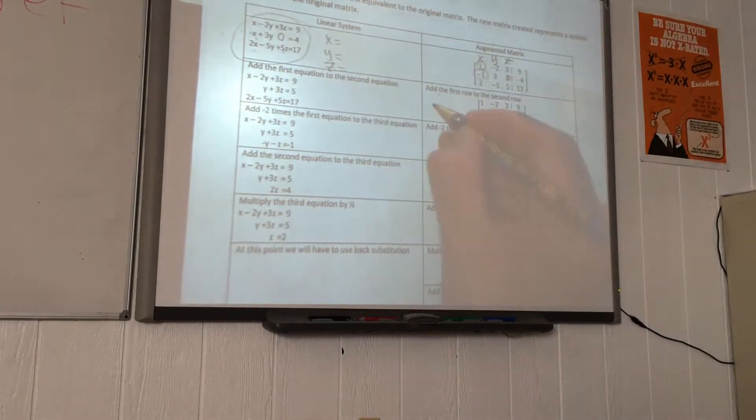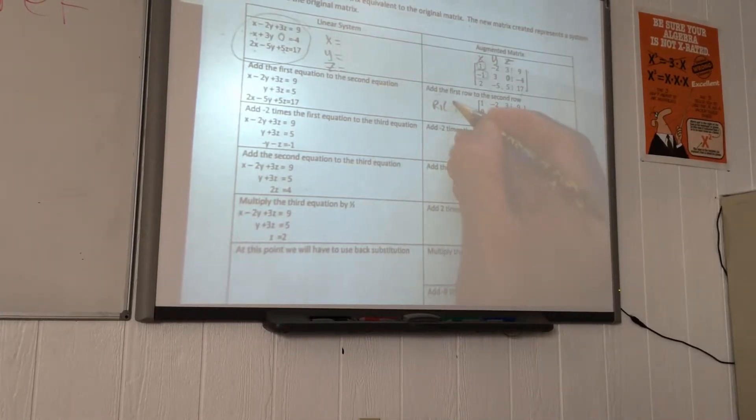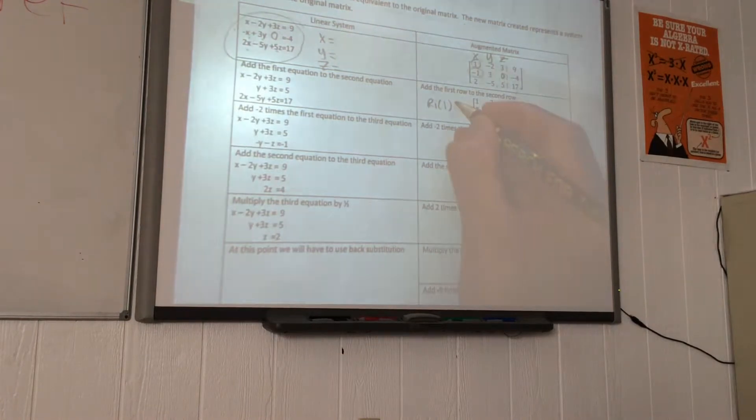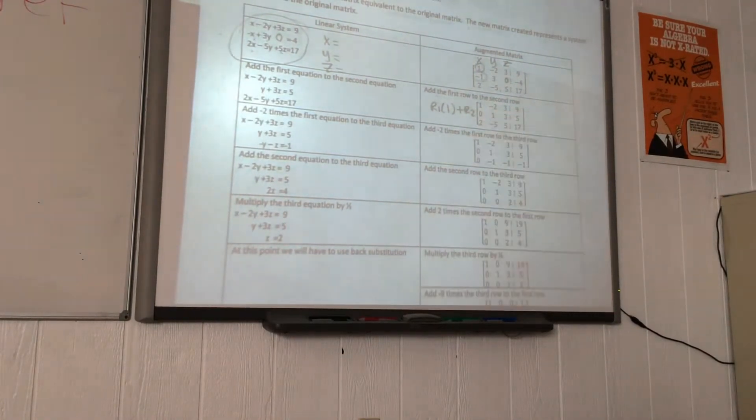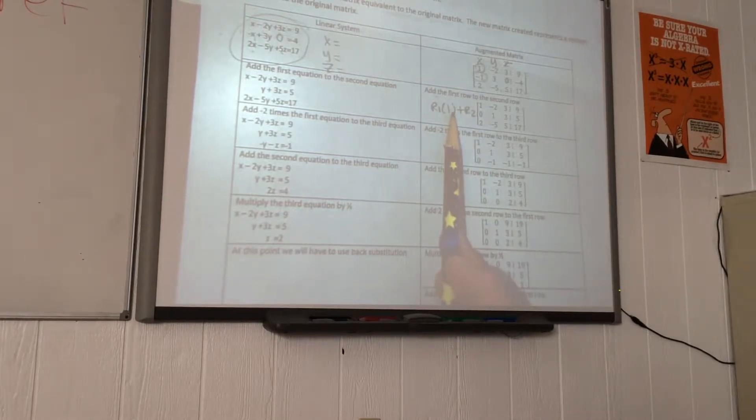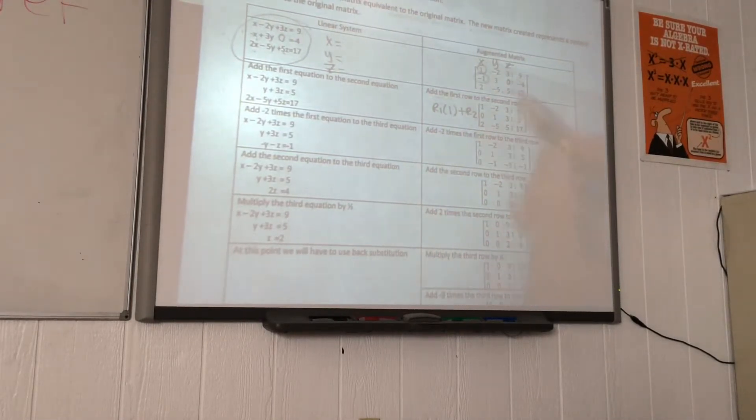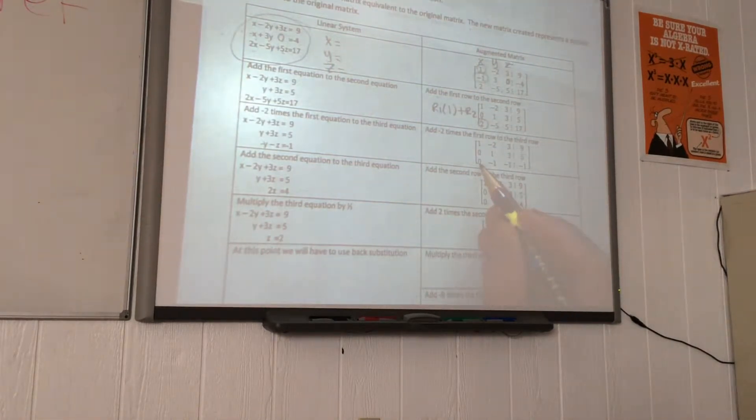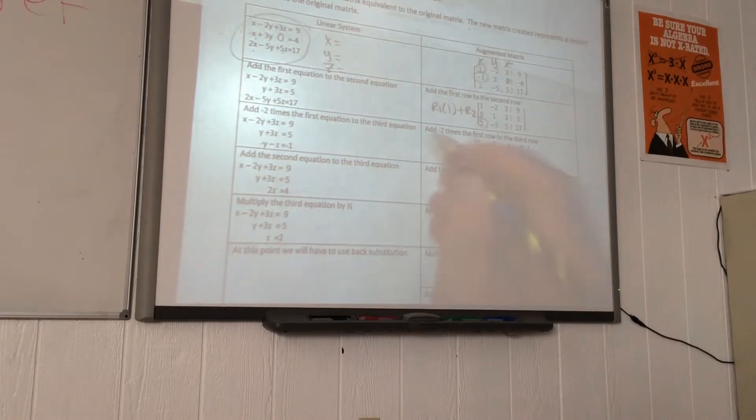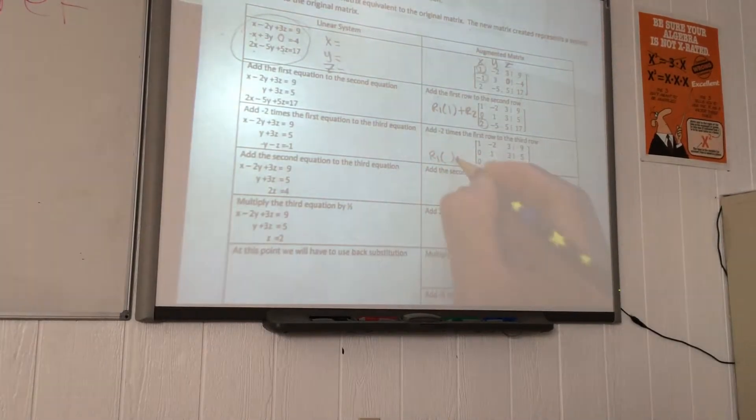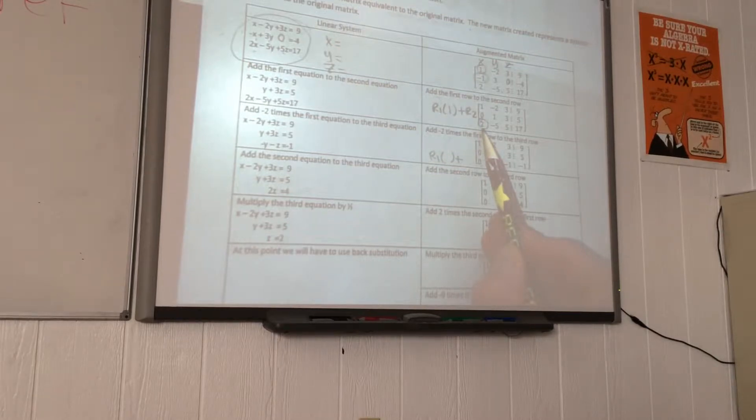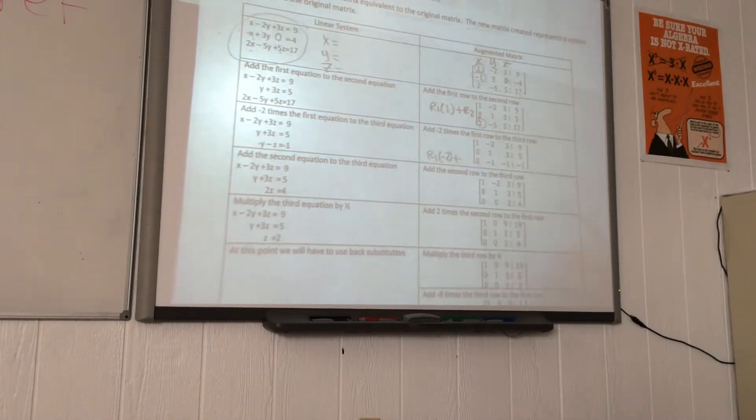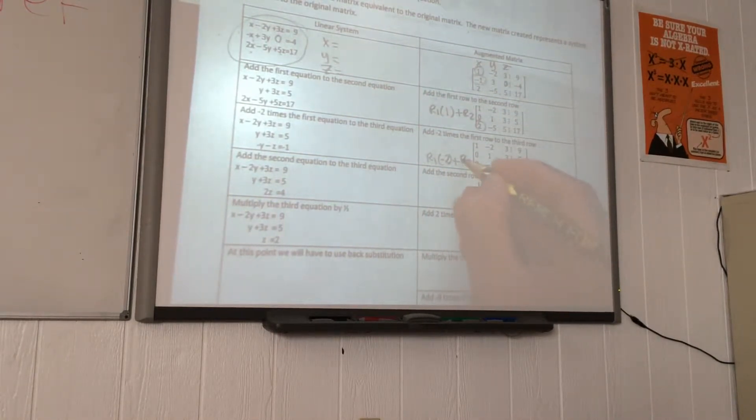We can proceed with the next step, which is to make this negative 1 into a 0. The leading row is R1. Multiply that. What is the additive inverse of negative 1? Positive 1. And then we add that to R2. This is row notation. Next step is to make this 2 turn into a 0. By using the same leading row, which is R1, the additive inverse of 2 is negative 2. And now we add that to R3.